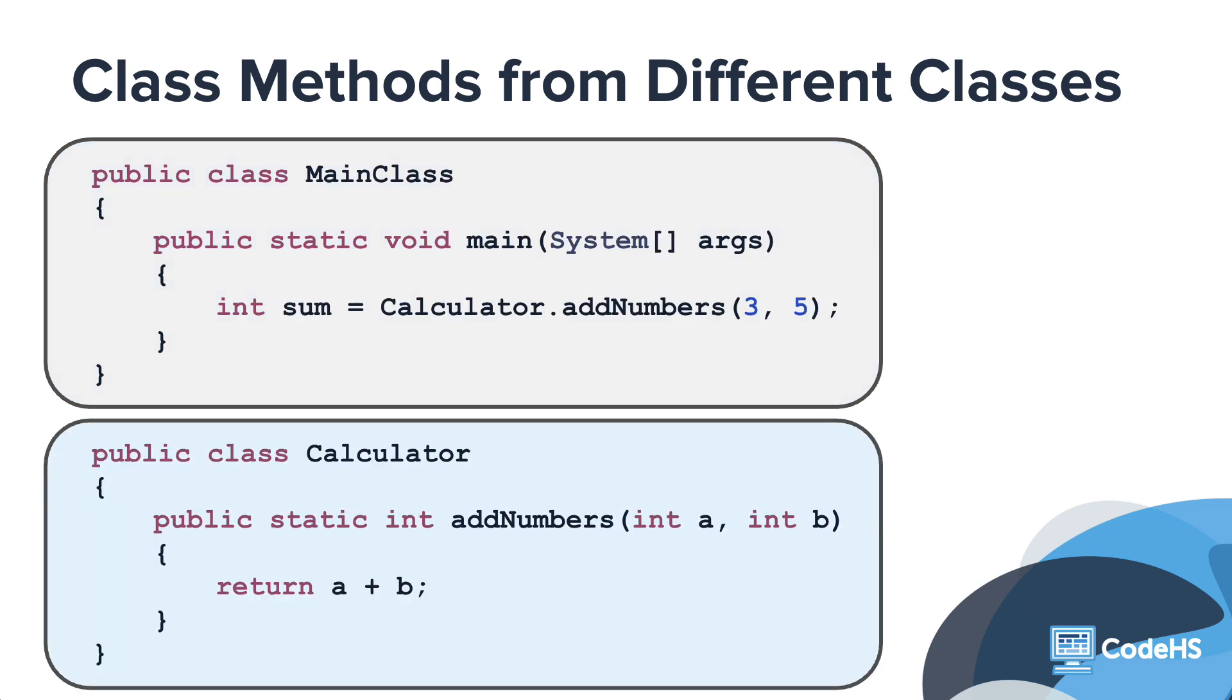Here, the new calculator class is added to a program with the main class. In order to call the AddNumbers method from the main class, you use the class method dot notation, calculator.AddNumbers, with the two arguments. This tells the program that you are calling the AddNumbers method from the calculator class. Pretty easy.